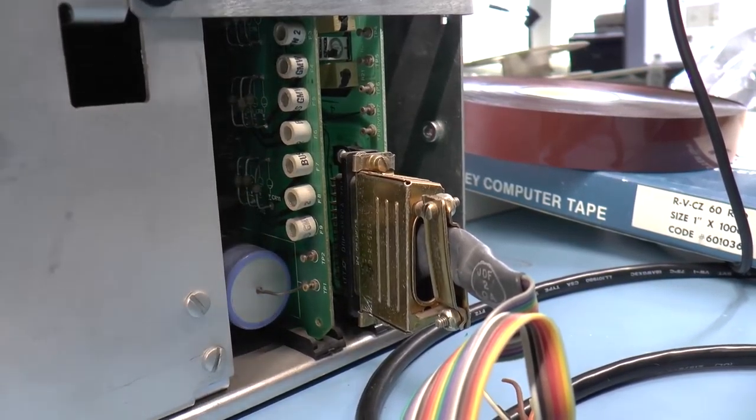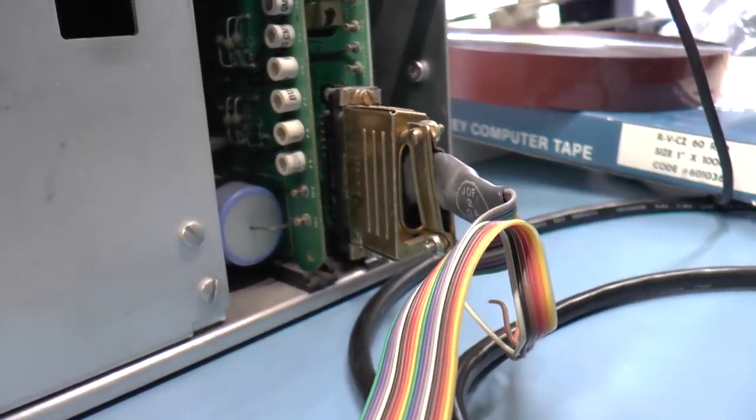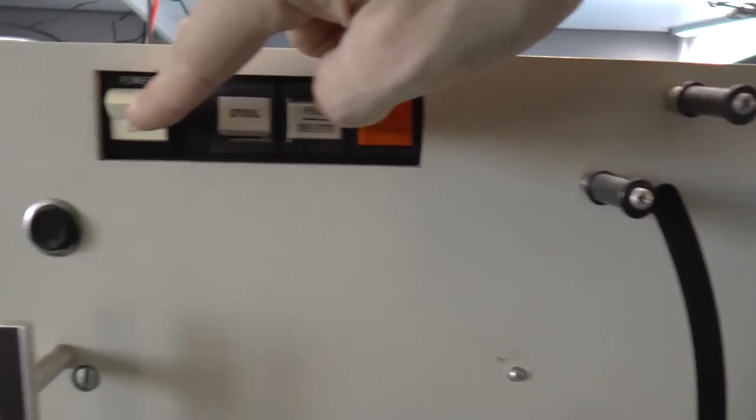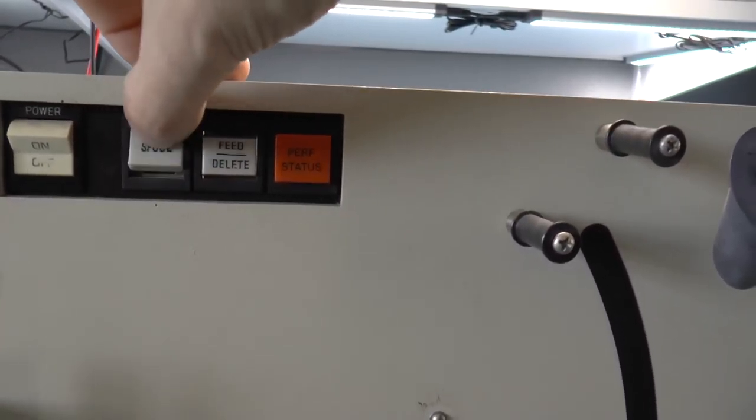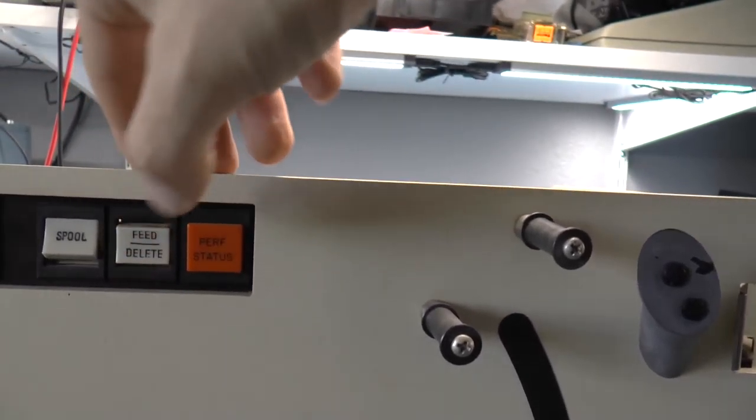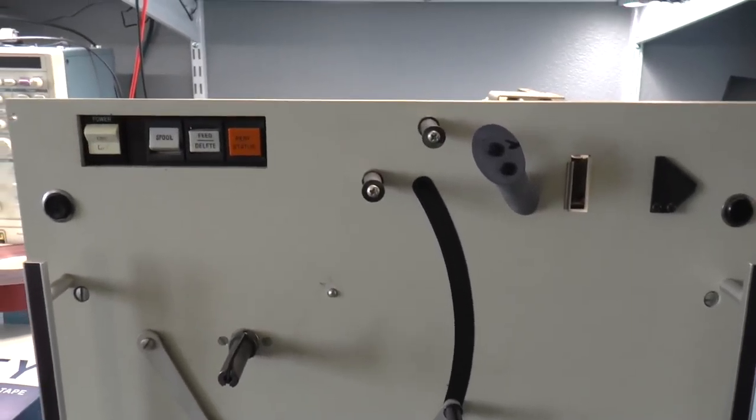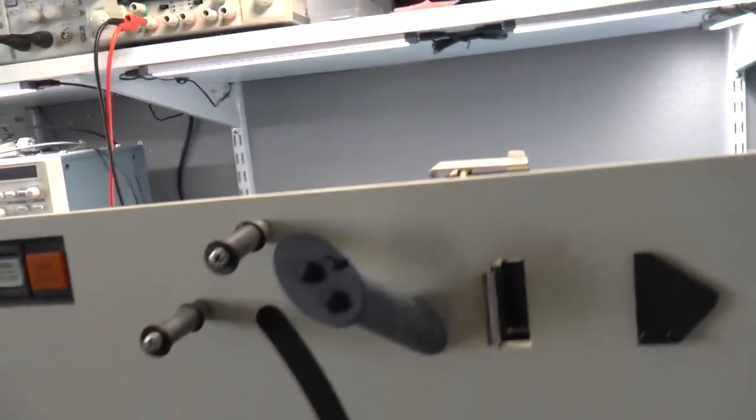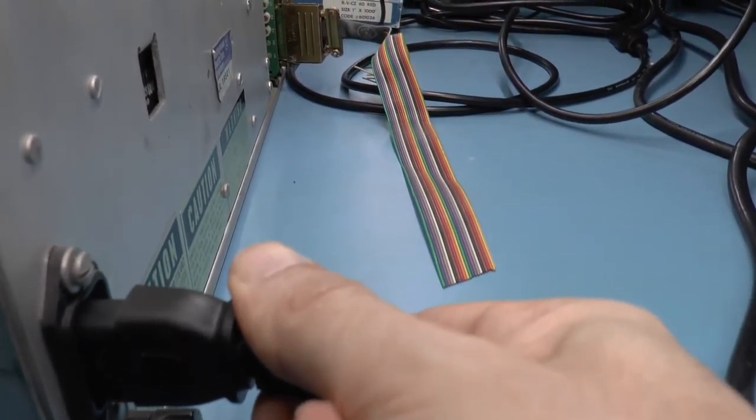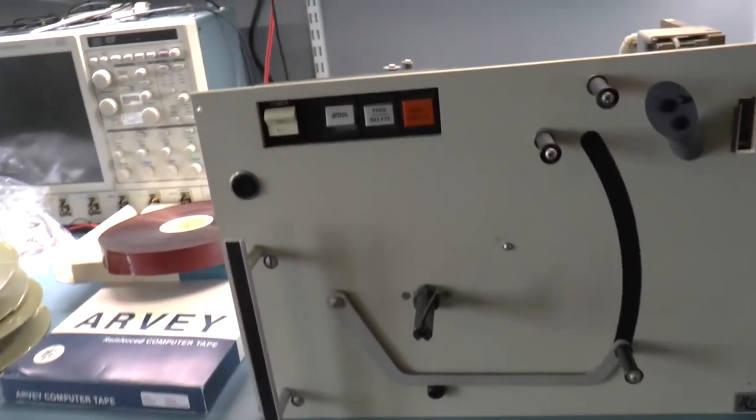So I don't really want to power this up yet. Well, okay, you've talked me into it. Let's take a look at the front panel. We've got an on off switch. We have a spool. We have feed and delete. Delete. How can you delete a hole? And perf status. I guess nothing happened. And now I'll turn it on and see what happens.